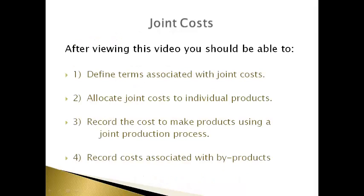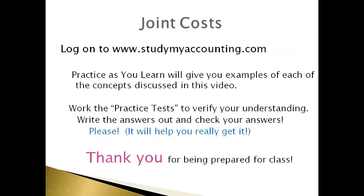After viewing this video, you should be able to define the terms associated with joint cost and allocate joint costs to individual products. You should also be able to record the cost to make products using a joint production process and record costs associated with byproducts. Please log on to StudyMyAccounting.com and use the practice examples for each concept discussed in this video. Then work the practice test to verify your understanding — write out the answers and check them against the explanations provided. It will help it stick. Thank you for being prepared for class.